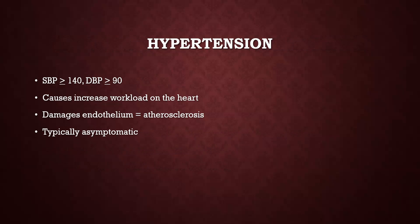Hypertension, or high blood pressure, is defined by one of two things. The American Heart Association says anyone above 130/80 is considered hypertensive. However, most nursing texts will define it as a systolic blood pressure consistently greater than or equal to 140 mmHg and/or a diastolic blood pressure greater than or equal to 90 mmHg.